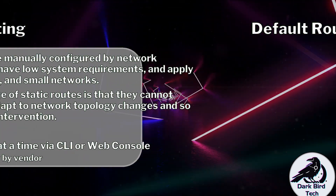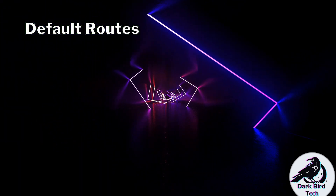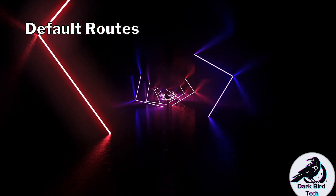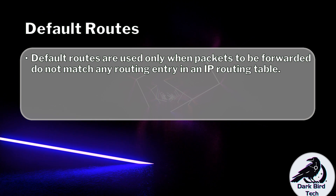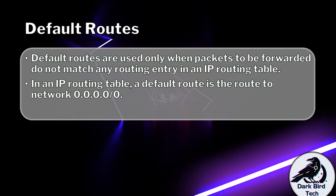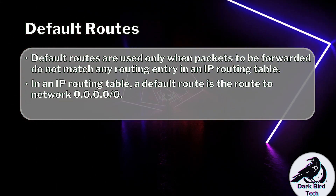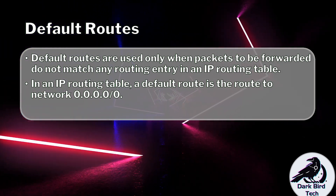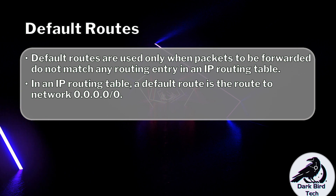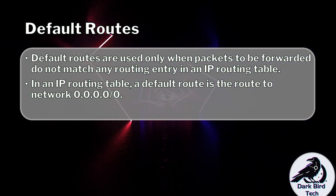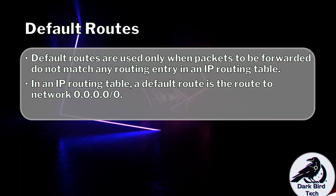Then we have something called a default route. Default routes are to routers what default gateways are to clients and servers — it's the IP address you send traffic to if you don't have a better routing table entry for a given destination. Default routes are used when the router doesn't have a matching entry. In an IP routing table, the default route usually has a network address of 0.0.0.0 with a mask of 0.0.0.0. The router reads that as the network address being undefined, but when a packet doesn't match anything else, it treats 0.0.0.0/0 as its longest possible match — meaning it's a valid IPv4 address but nothing else matches better.